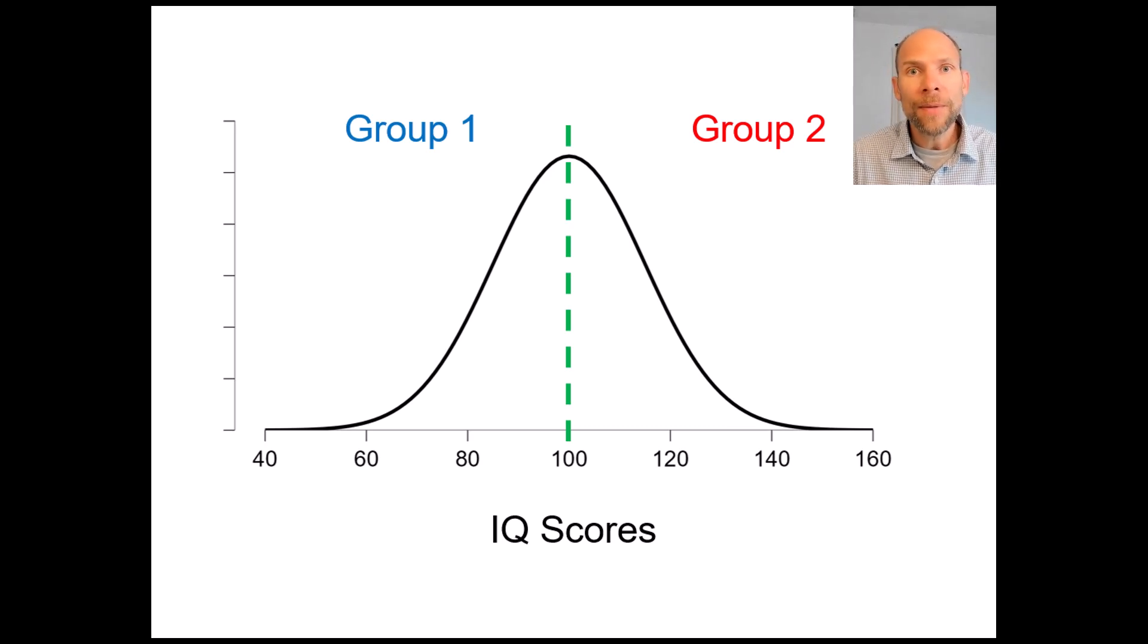So first of all when you do this obviously you lose a lot of information because a lot of the people on the left hand side of the distribution are very different from one another and so even though they're very different from one another they are still mixed together into the same group.